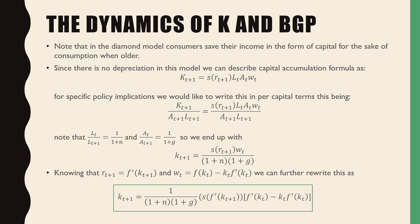For specific policy implications, we like to write this in per capita terms: KT+1 divided by AT+1 times LT+1, which is the effective labor in period T+1. LT over LT+1 is equal to one over one plus N, and AT over AT+1 is equal to one over one plus G, which is our growth rate in technology. So we end up with KT+1, capital per effective worker, equal to our savings rate times the wage per effective labor, all over one plus N times one plus G. We can further rewrite this as shown.